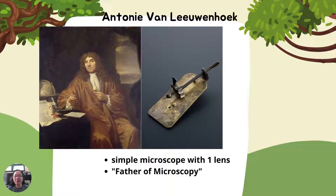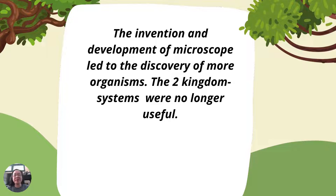Leeuwenhoek turned glass into a convex lens with a magnification of 270 times and attached it to a contraption that resembles today's simple microscope. This simple, single-lens hand-held microscope is what he used to study insects and other specimens, including blood cells and bacteria, which he discovered in 1674 by looking at a sample of lake water. For this, he is credited as the father of microscopy, as well as a key player in the development of the cell theory. The invention and development of the microscope led to the discovery of more organisms.